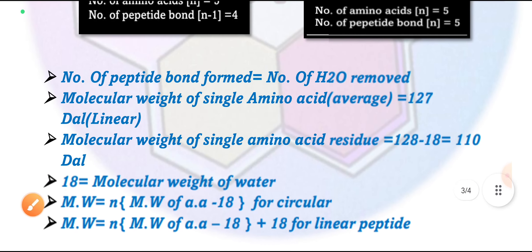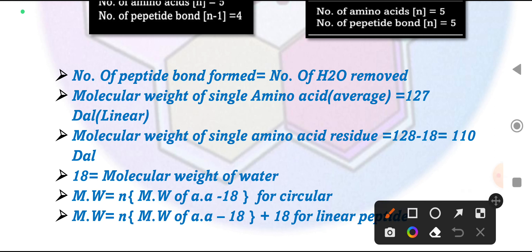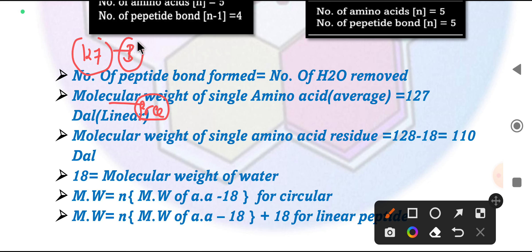When amino acids are in free form, each has an average molecular weight. When they form peptide bonds with another amino acid, hydrolysis removes one water molecule per bond. So we subtract 18 daltons (the molecular weight of water) for each bond formed. The bound formula reflects this water removal per linkage.